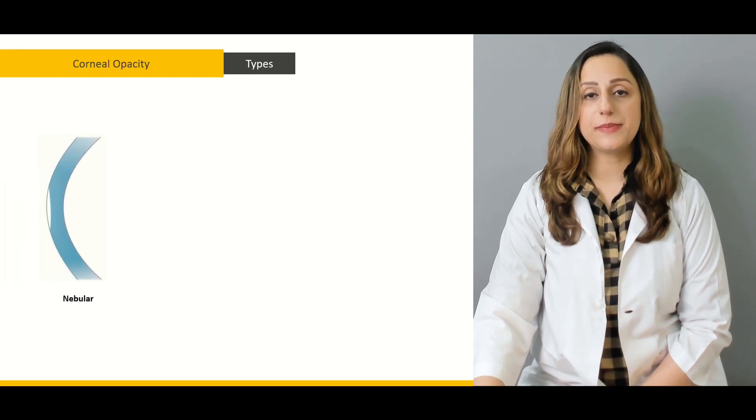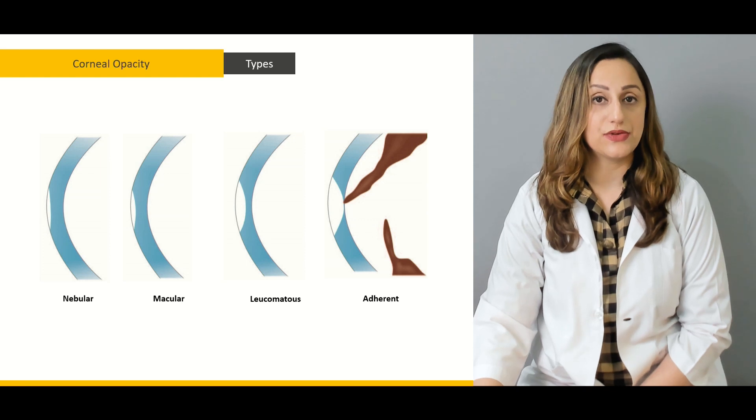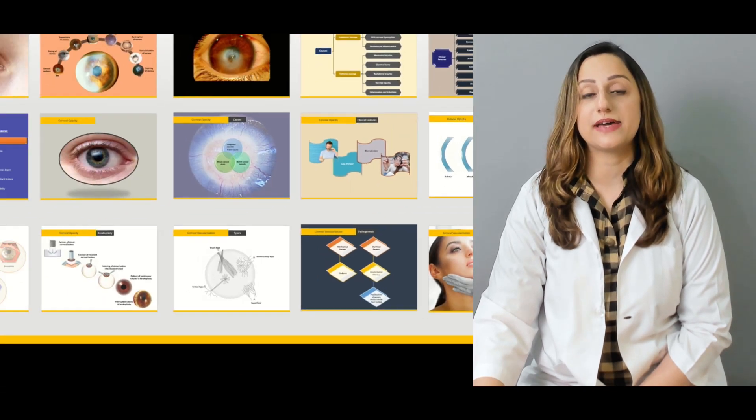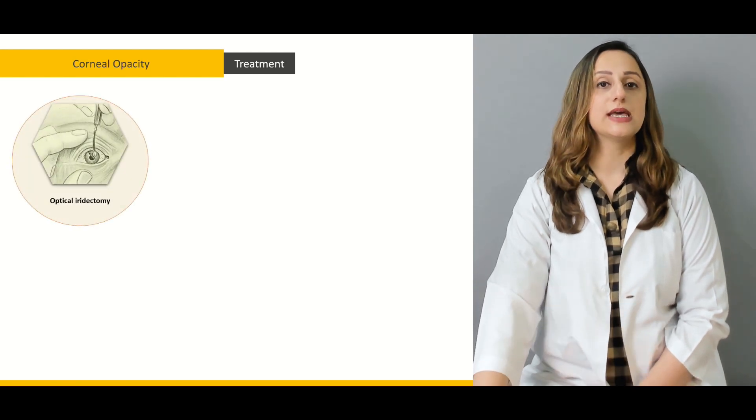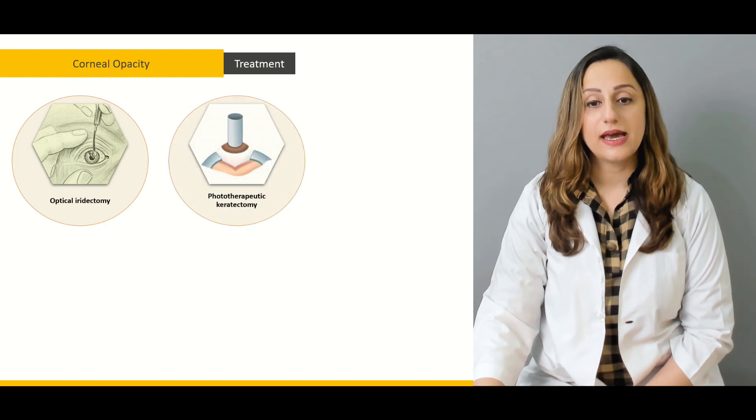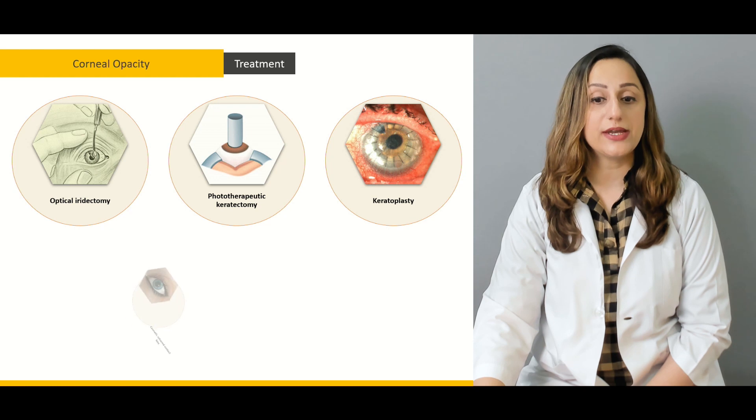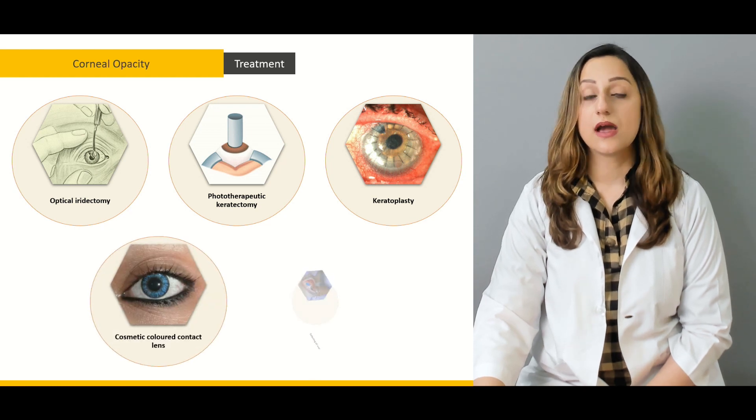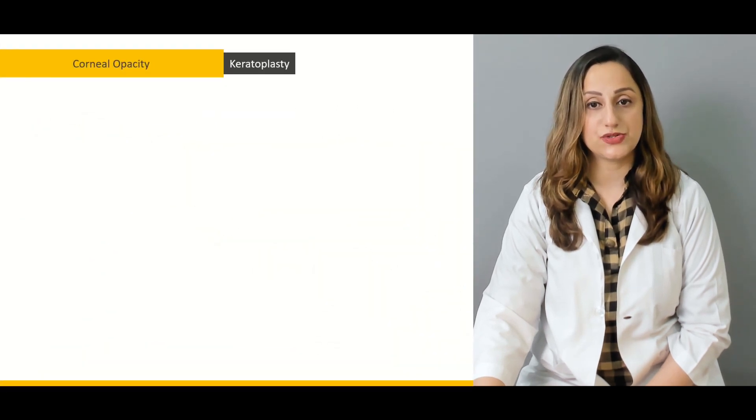The types of corneal opacities are namely nebular, macular, leucomatous, and adherent. How do we clinically classify them and what are the treatment modalities? These basically encompass optical iridectomy as well as phototherapeutic keratectomy. Along with keratoplasty, we can apply cosmetic contact lenses as well as tattooing of these scar lesions.